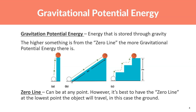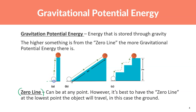One of the two main types is gravitational potential energy — energy that is stored through gravity. The higher something is from the zero line, the more gravitational potential energy there is. The zero line can be at any point, however it's best to have it at the lowest point the object will travel — in most cases, the ground.